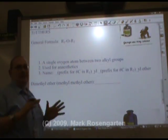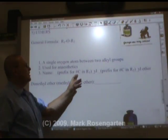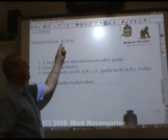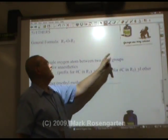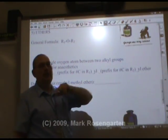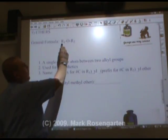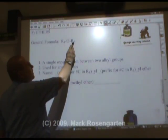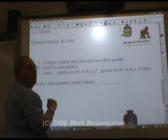The way to name an ether is: you name it for the number of carbons in the first chain with a 'YL' suffix, then the prefix for the number of carbons in the second chain with 'YL ether.' So if there's one carbon on one side and two carbons on the other, it's methyl ethyl ether.